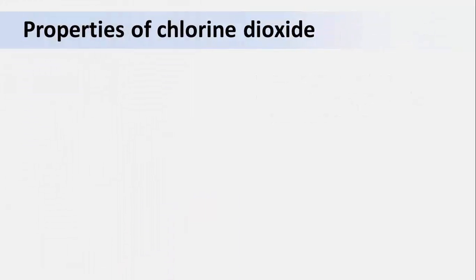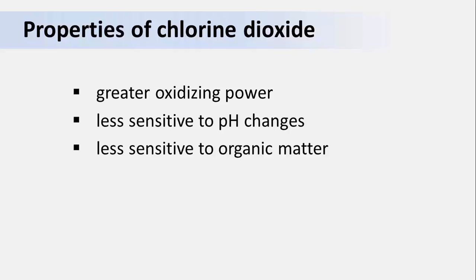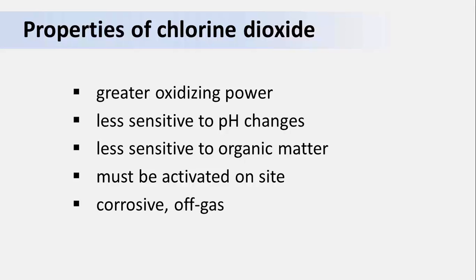Chlorine dioxide sanitizers are similar to chlorine sanitizers, but they do differ in some important ways. Chlorine dioxide has greater oxidizing power and is used at lower concentrations, and it's very economical. Chlorine dioxide is less sensitive to pH changes and also to organic matter in the wash water. Chlorine dioxide must be activated on site, so it's somewhat more difficult to use. Like chlorine, chlorine dioxide is corrosive and can off-gas if handled improperly.